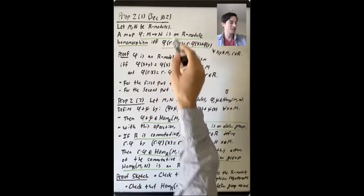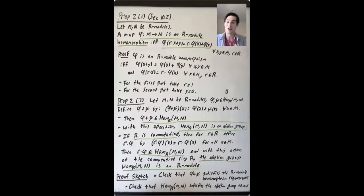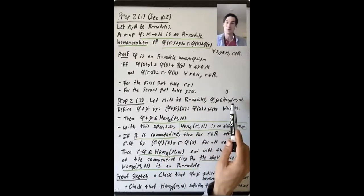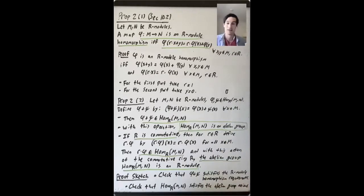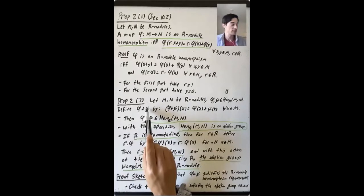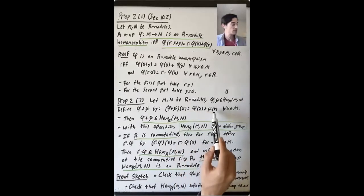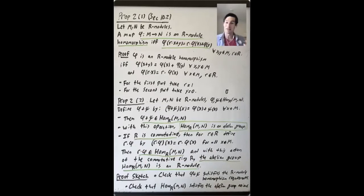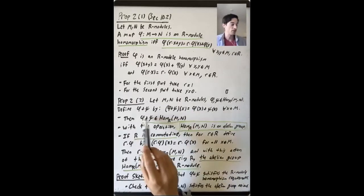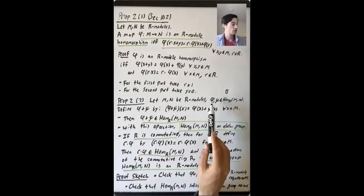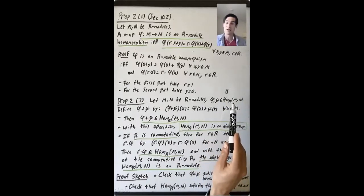Let's now use this criterion to say something about the structure of the set of R-module homomorphisms between two R-modules M and N. Let phi and psi be two R-module homomorphisms from M to N. We're going to define phi plus psi by saying what it does to every element of the module M: it sends x to phi(x) plus psi(x). And we claim that with this definition, phi plus psi is also an R-module homomorphism from M to N — the sum of two R-module homomorphisms is also an R-module homomorphism.